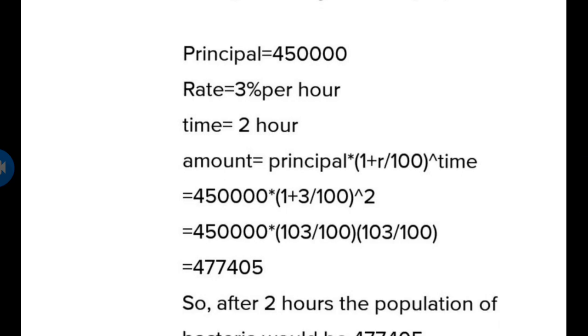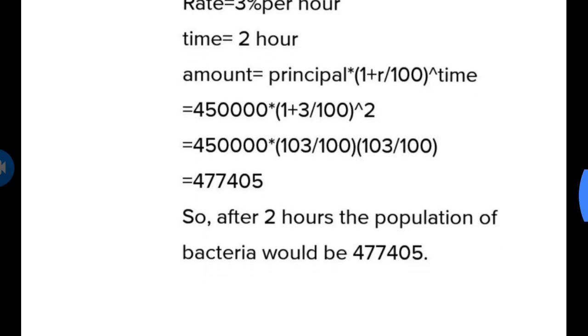We will put up the formula here: principle times (1 plus r upon 100) to the power of time. When we put these values in the formula, we will simply get the answer. After 2 hours, the population of bacteria would be this.